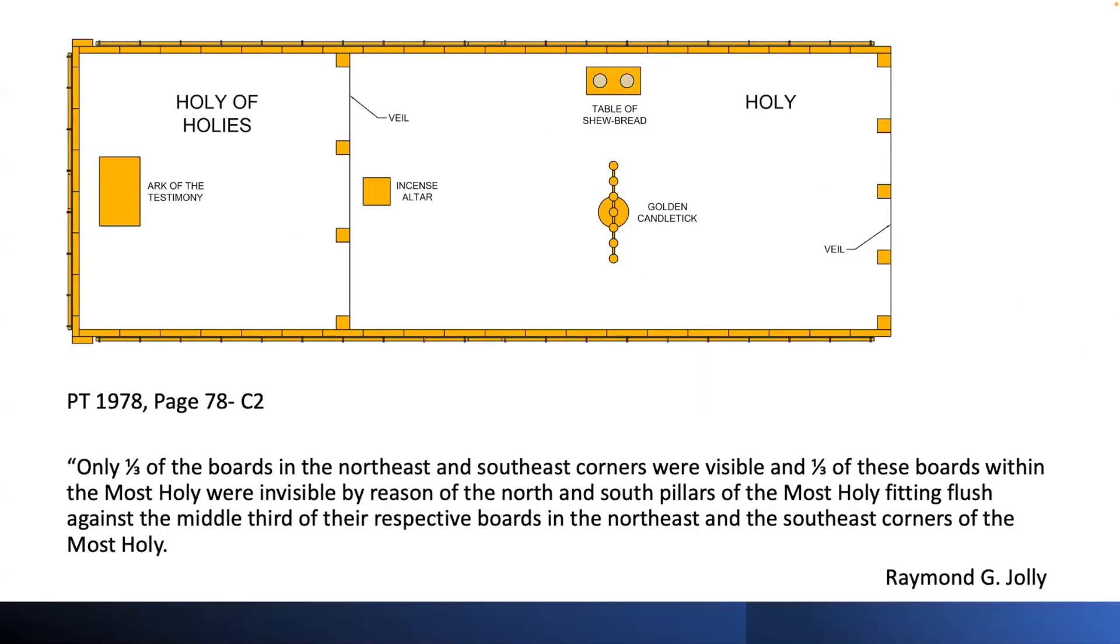Brother Jolly states that only one-third of the boards in the northeast and southeast corners were visible, and one-third of these boards within the Most Holy were invisible by reason of the north and south pillars of the Most Holy fitting flush against the middle third of their respective boards in the northeast and southeast corners of the Most Holy.